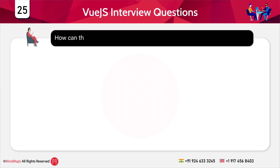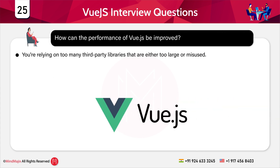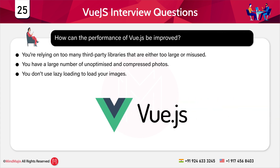The next question is: how can the performance of Vue.js be improved? Your Vue application may become slow for various reasons: relying on too many large third-party libraries, a large number of unoptimized and uncompressed images, not using lazy loading for images, redundant code, not reusing functionalities across your program, and loading all pages at once. In order to increase performance, you can address all of these points.